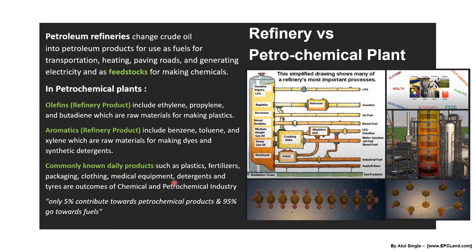There is a very interesting fact here: of everything produced by refinery and petrochemical plants combined, only five percent contributes towards petrochemical products. You may look around and see a lot of things made of plastic, fertilizers, clothing — but these represent just five percent of the output. The other 95 percent goes towards fuel. That is how this industry works, and even though five percent seems small compared to 95 percent, it is still a huge industry globally.